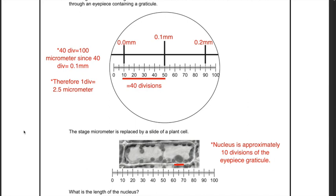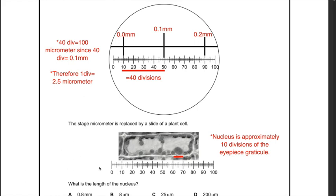40 divisions equals 100 micrometers, since 40 divisions equals 0.1 millimeter. To convert from millimeter to micrometer, multiply by 1000, as 1 millimeter equals 1000 micrometers. Therefore, from 10 to 50 — 40 divisions — equals 100 micrometers. One division equals 2.5 micrometers (100 ÷ 40). Since the nucleus covers 10 divisions, multiply 10 by 2.5 micrometers to get the length as 25 micrometers. The answer is C.